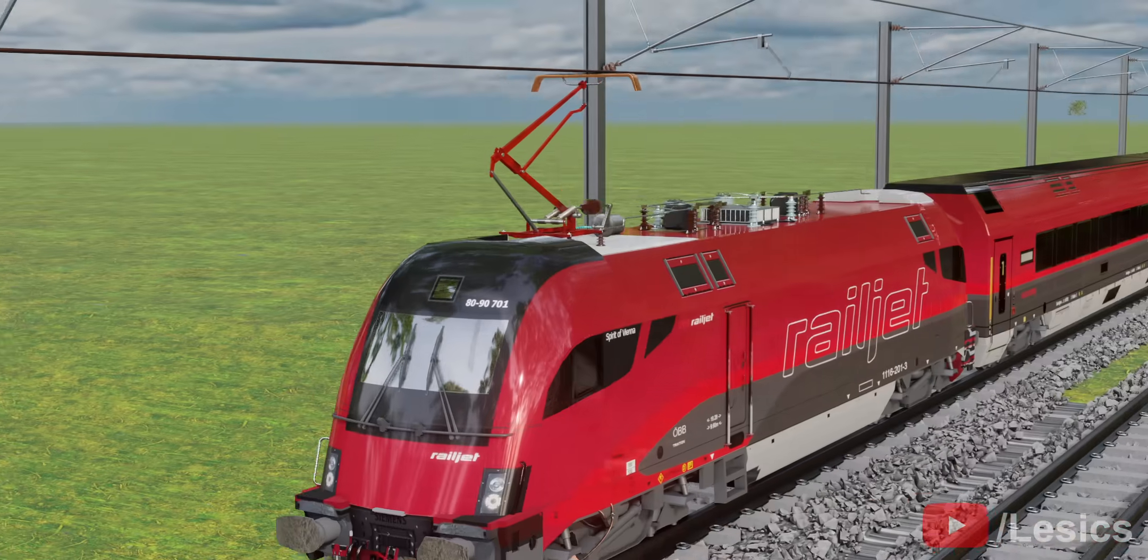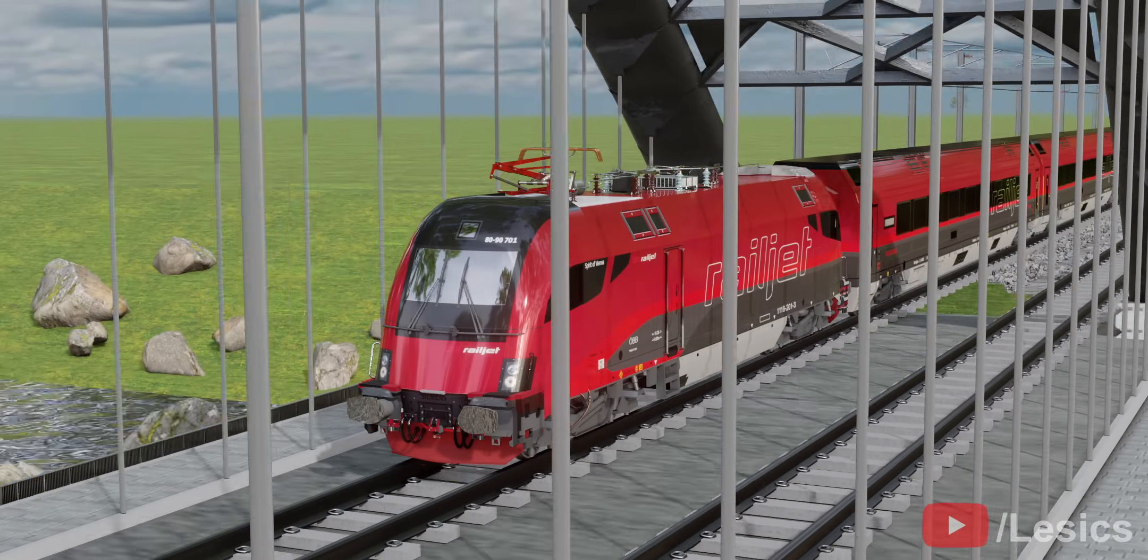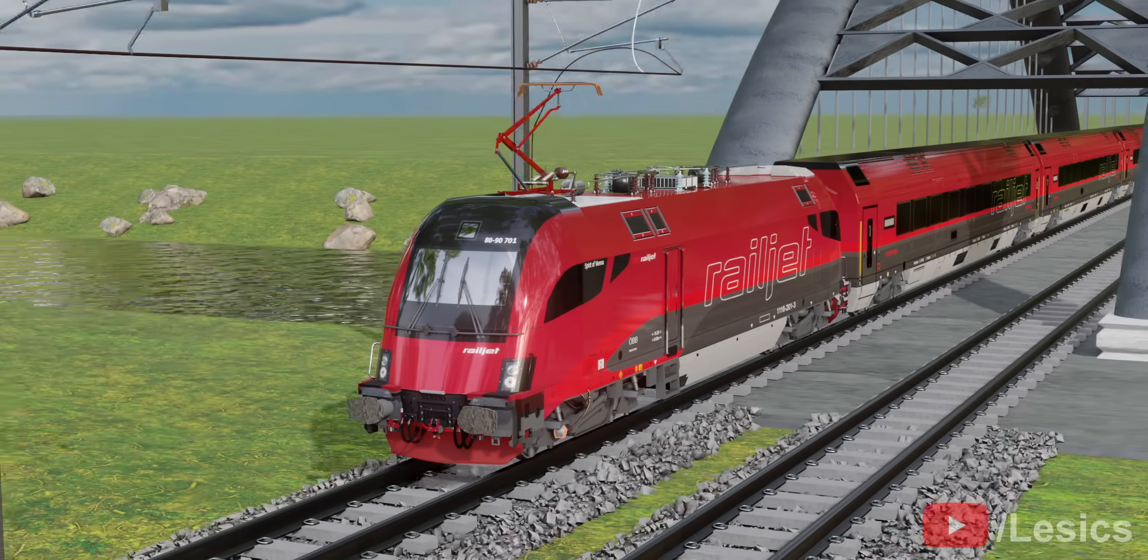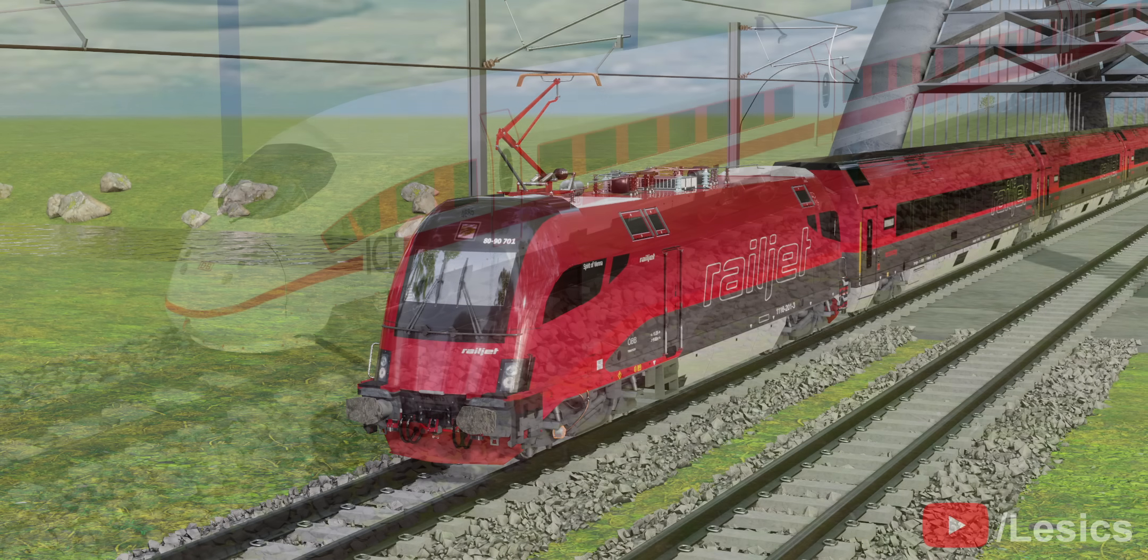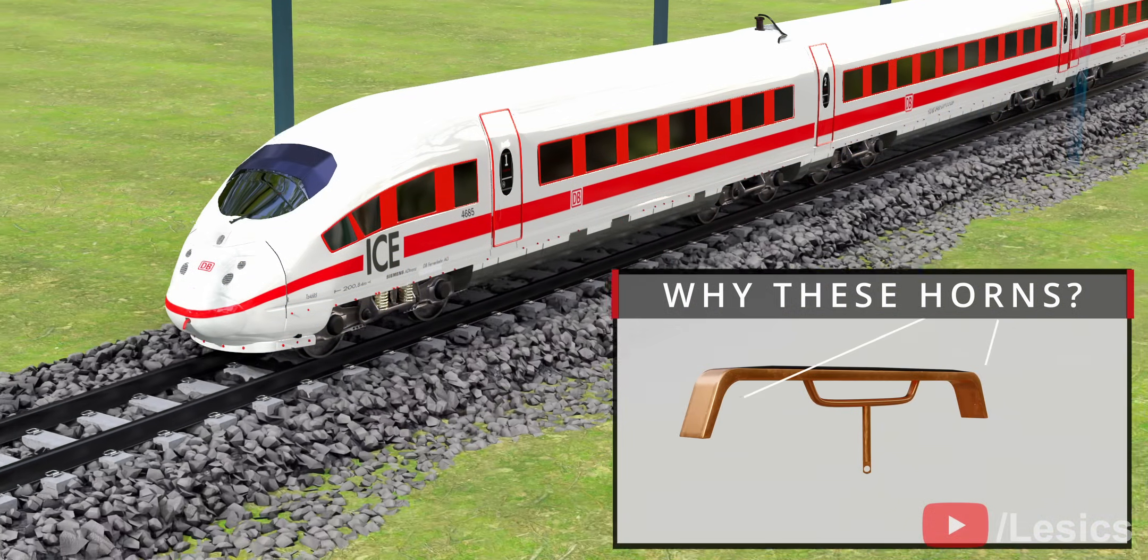In cases if the pantograph has to be lowered or disconnected, the train will continue its free run for a few kilometers due to its high momentum. Now, back to the curious question we posed previously in this video.